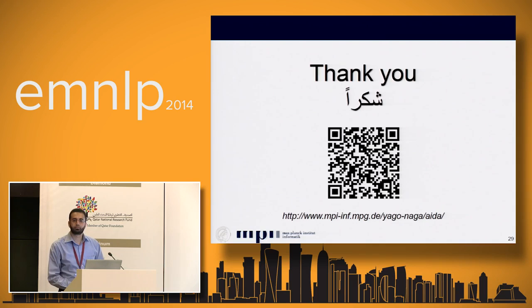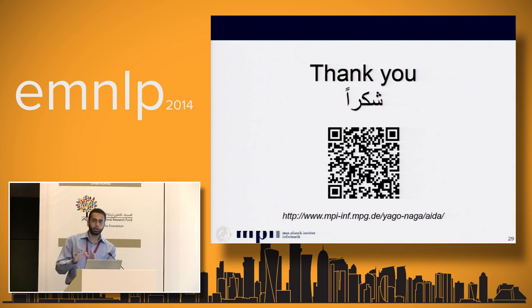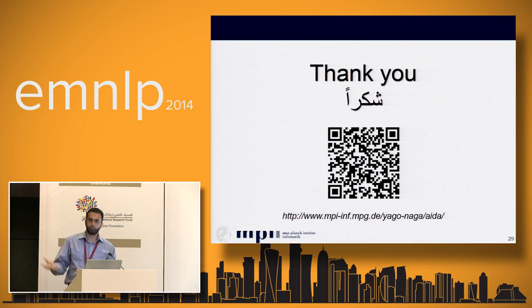An audience member asks about new name entities that pop up — entities not previously in the dictionary, such as a village not mentioned before. To what extent does the system rely on structural information to identify a location or person's name? The speaker notes this is a general NED problem, not specific to Arabic. For AIDA, there is already an approach to include emerging entities from news — collecting news, detecting emerging entities, adding them, and automatically collecting key phrases. A colleague in the group is working on this.